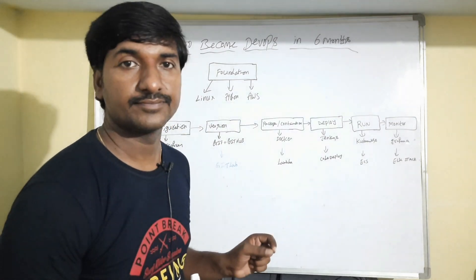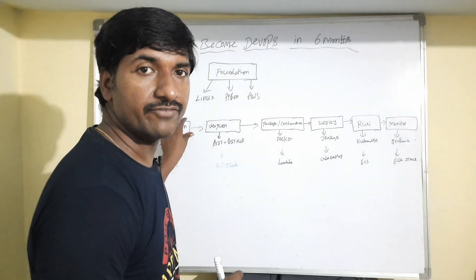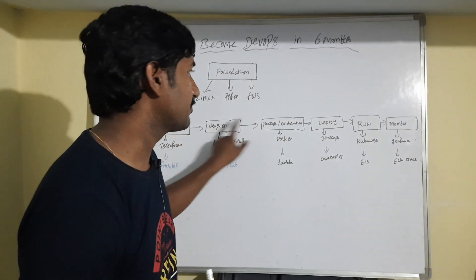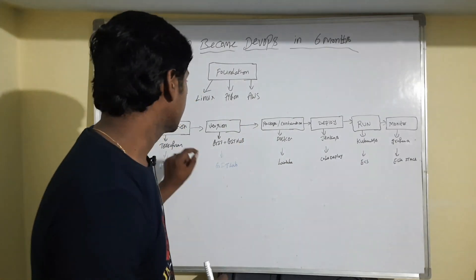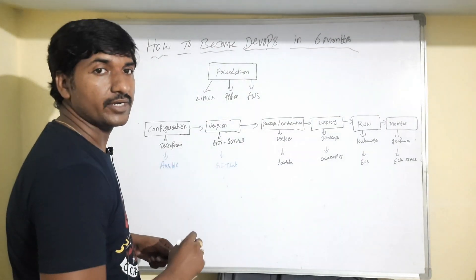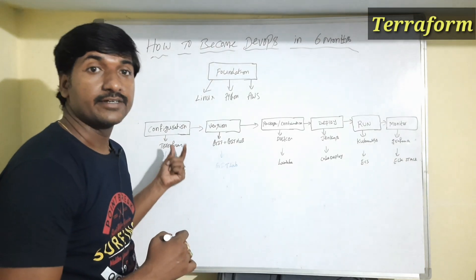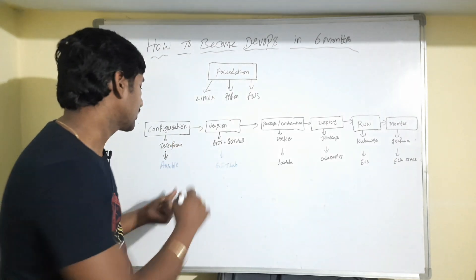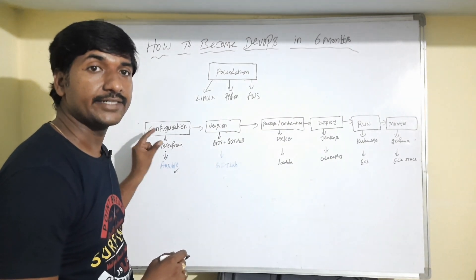I have divided the DevOps course into six parts. Each part takes one month, so the minimum duration to complete the DevOps course is six months. The first part is configuration management. The most in-demand configuration tool right now is Terraform — it is one of the most used infrastructure-as-code tools. If you have extra time, you can also learn Ansible. This part takes one month if you practice 20 to 30 minutes daily.